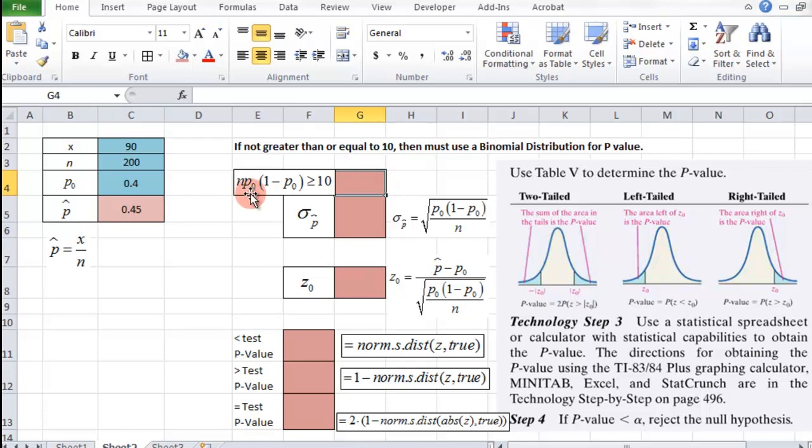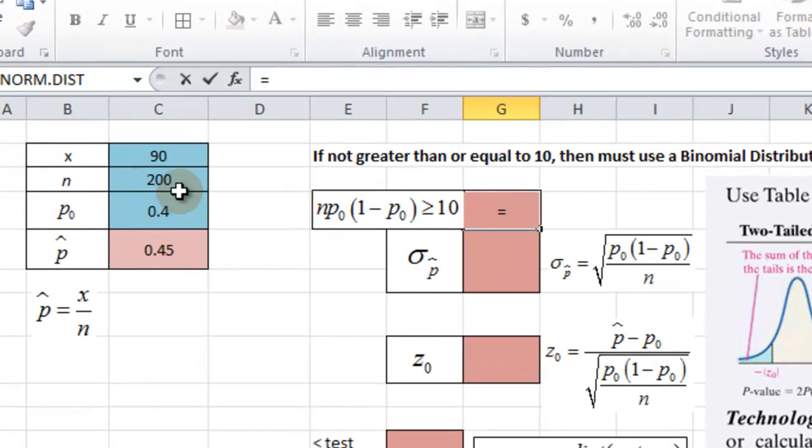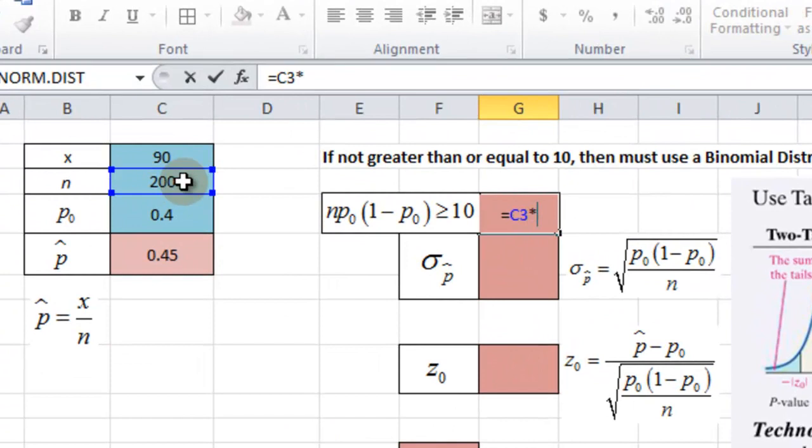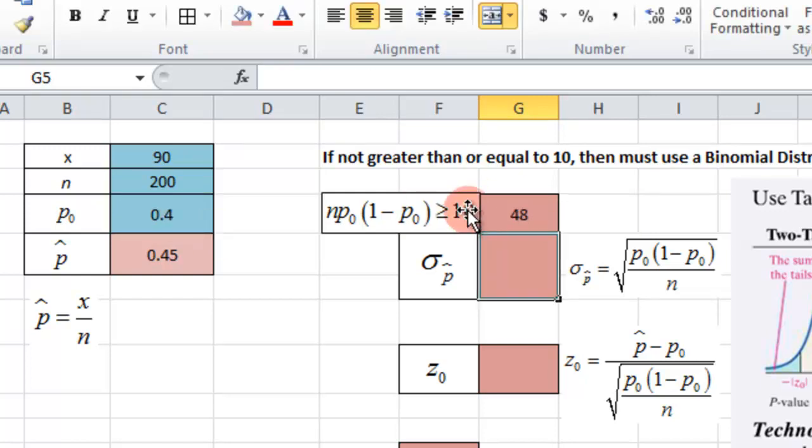Then here's our equation that we need to satisfy is greater than or equal to 10. The reason we do this is because then we're able to use a normal distribution with our values to get our p-value. If not, then we have to use a binomial distribution. So we set this equal, we have n times p-naught times 1 minus p-naught, so 48. That's greater than or equal to 10, so we can continue this path here.